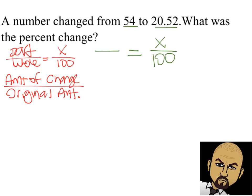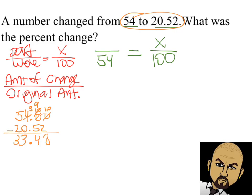We're asking for the percent, so it's going to be x percent, which is x per hundredths. We need to figure out the original amount. The number is changing from 54 to 20 and 52 hundredths, so the original amount is what you start with — it's 54. The amount of change: we figure out from 54 to 20 and 52 hundredths, how much is it changing? So we subtract. 54 minus 20 and 52 hundredths gives us an amount of change of 33 and 48 hundredths.